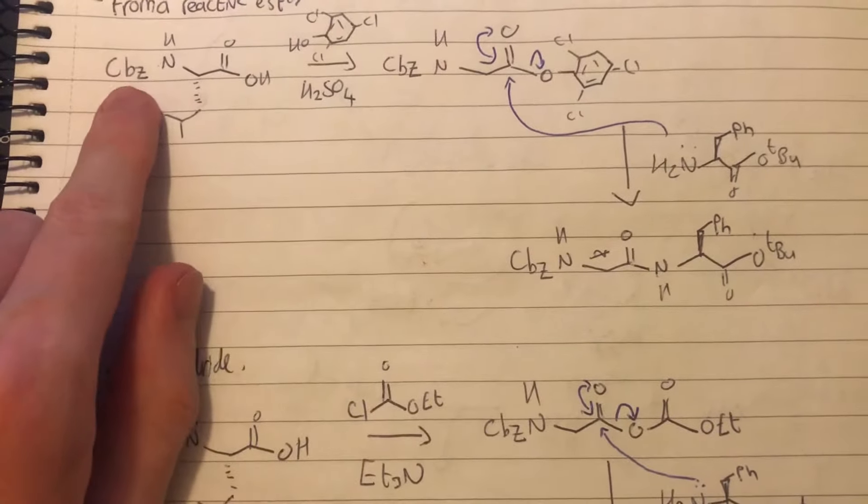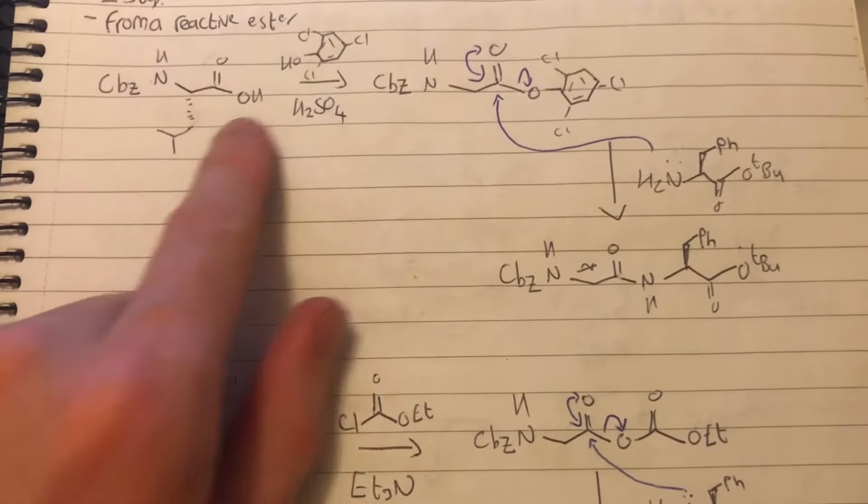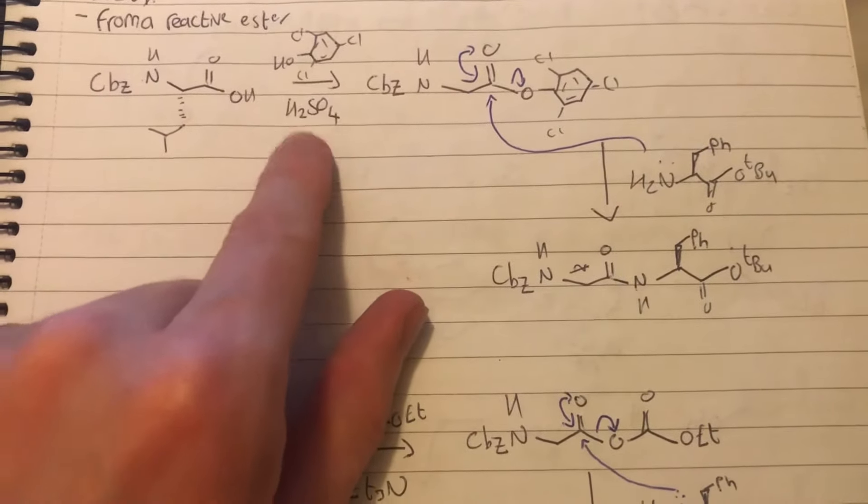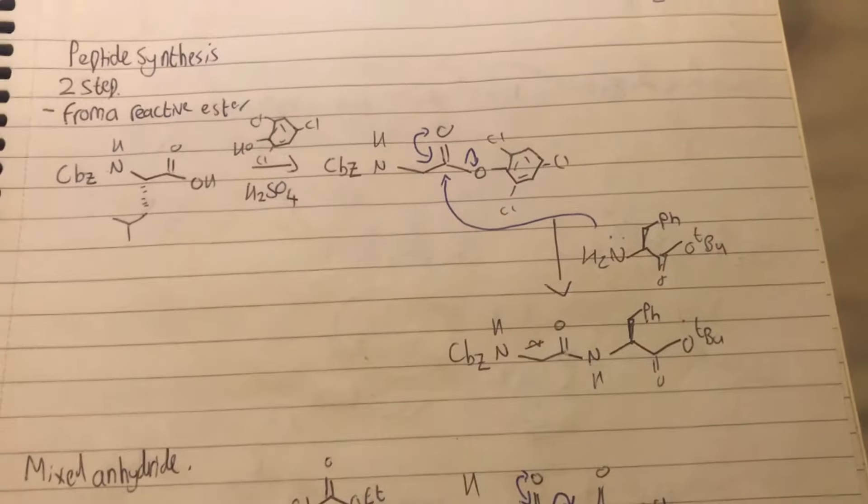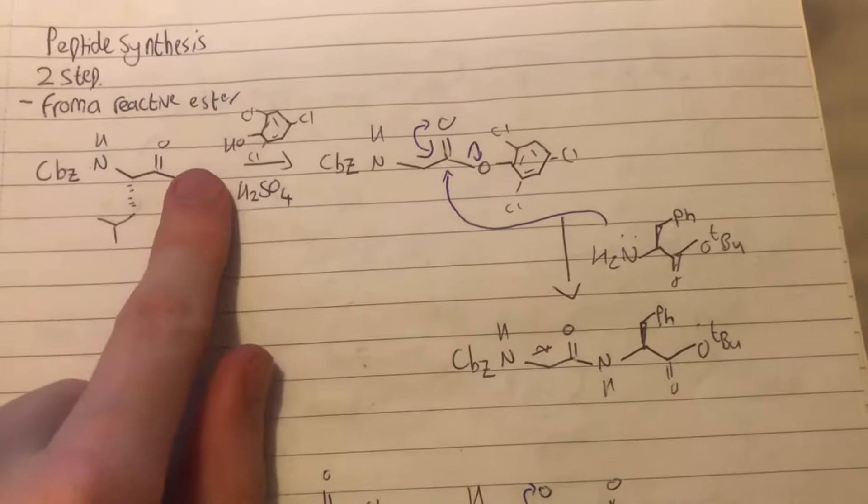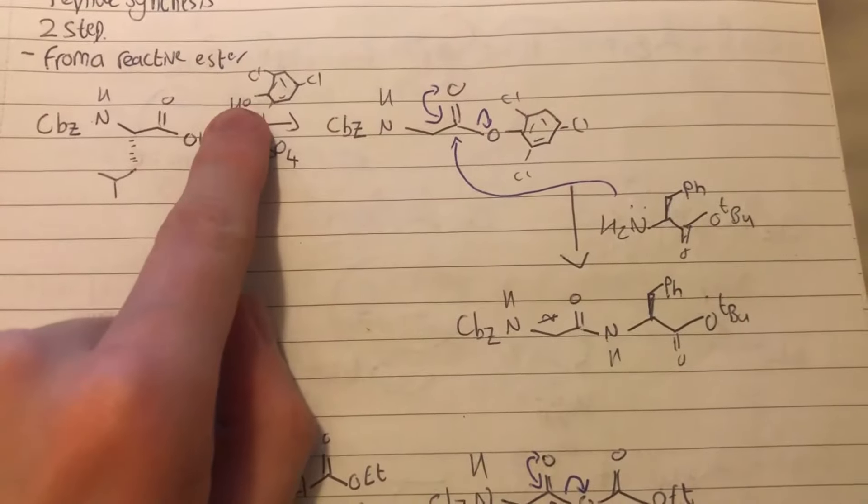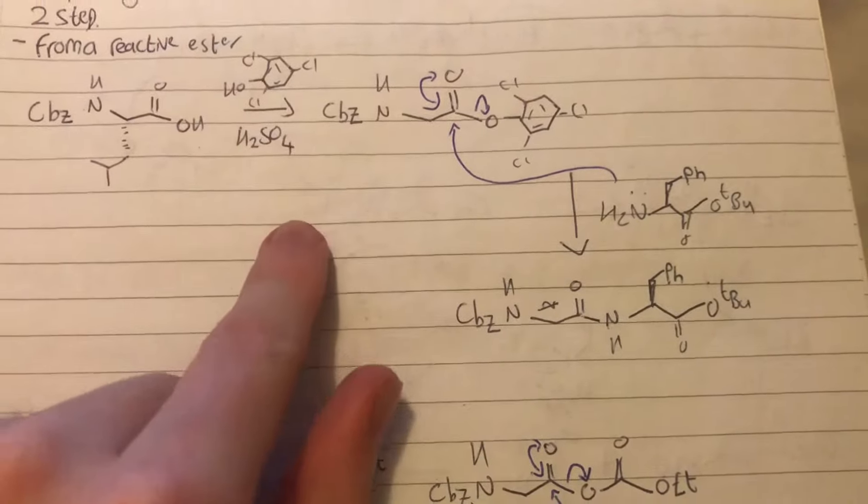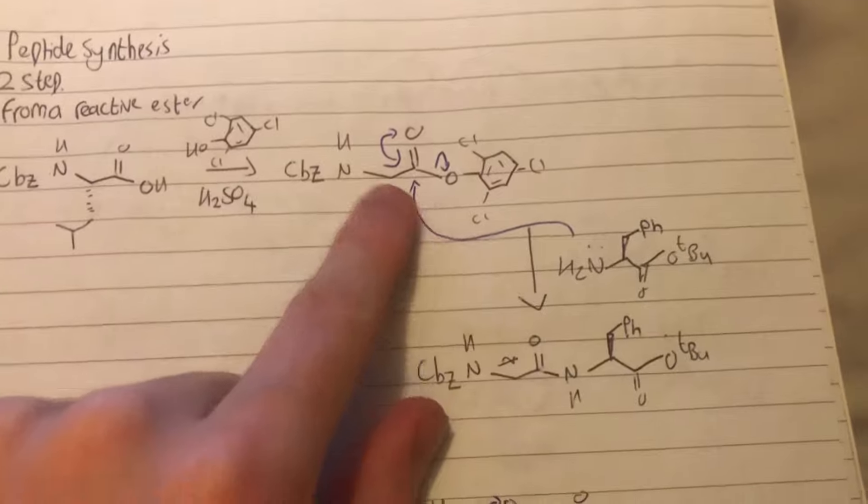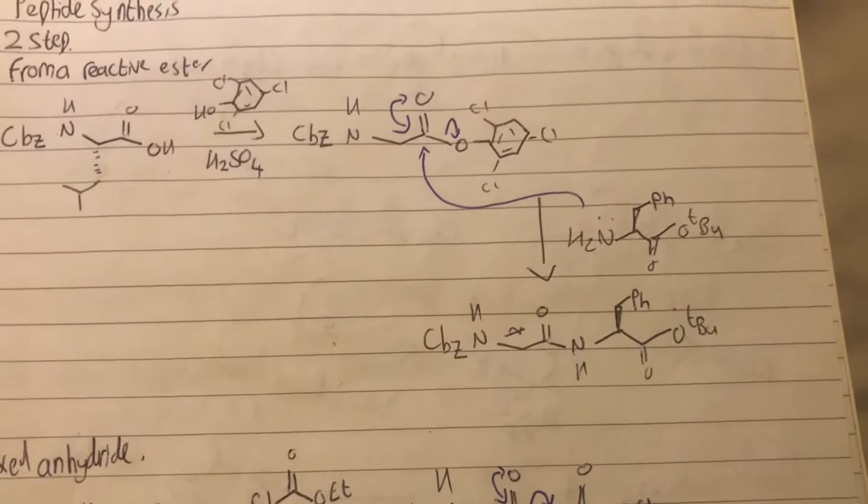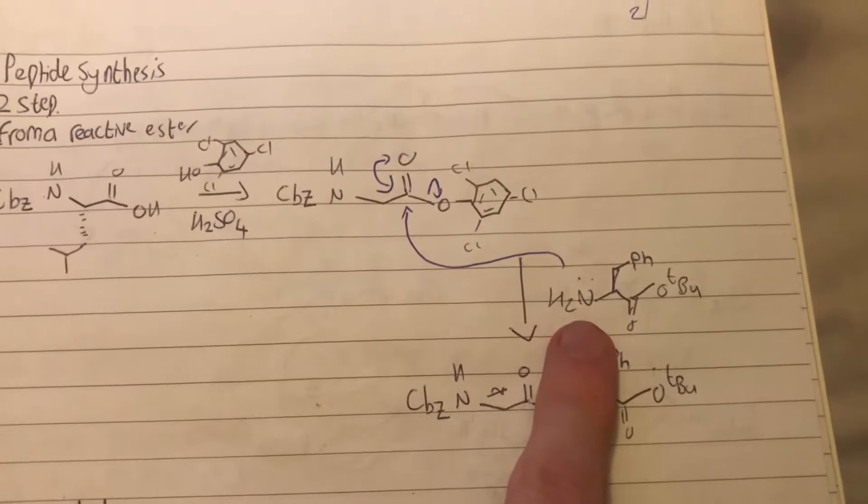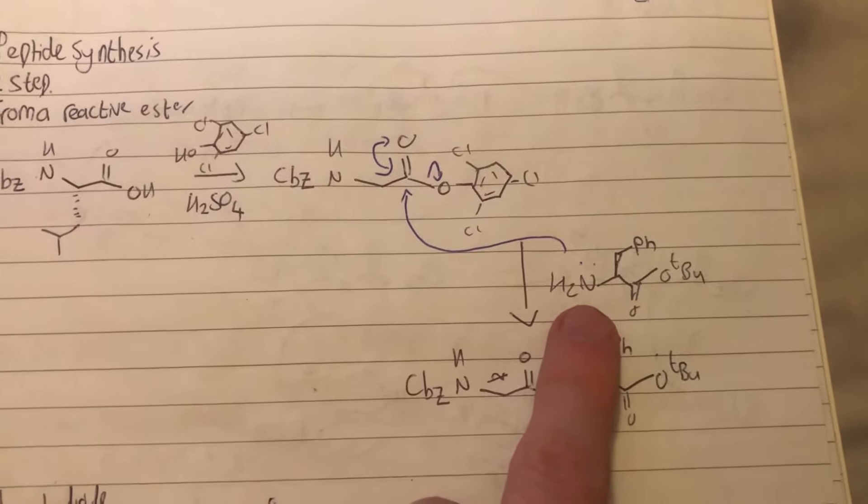As you can see, we've got a protected nitro group there which leaves this open to attack. We've got our OH there and a concentrated acid. What happens is we basically remove one of these OHs and an H there to form H2O, and we're able to do this little mechanism here. We're trying to add a peptide effectively.